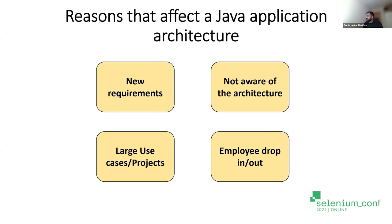Fourth: employee drop-in and drop-out. That's very common. People who started the application move out to a different organization or role, and the new team members have no idea what's happening in the codebase. There are instances where a whole team has been shuffled, leaving a team of inexperienced developers who are not really aware of how to arrive at a solution. These are the common reasons that really affect Java application architecture.